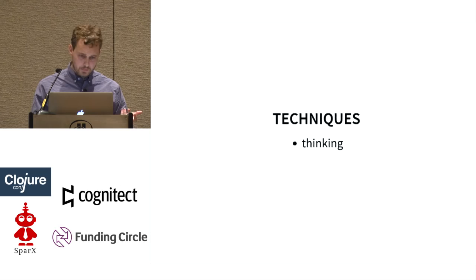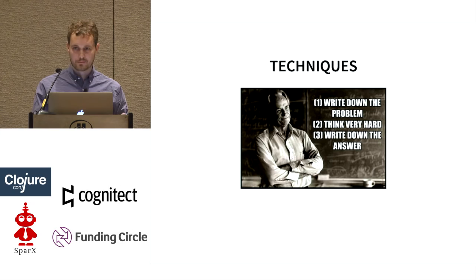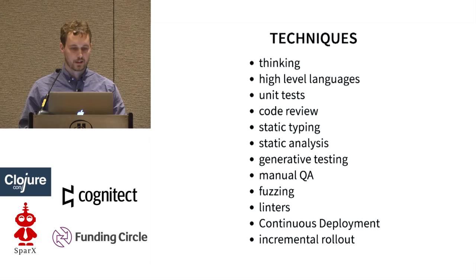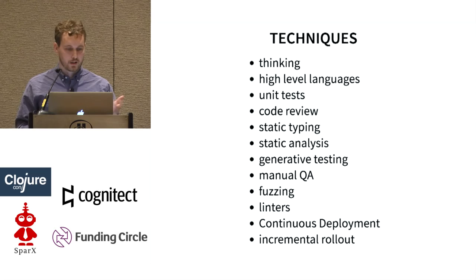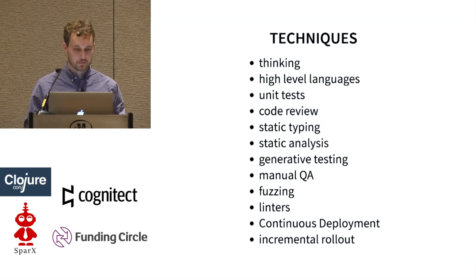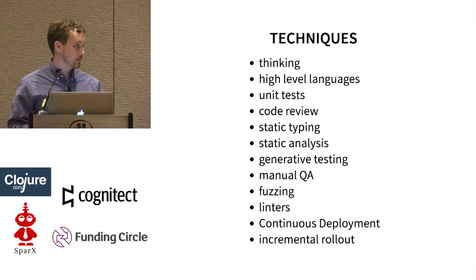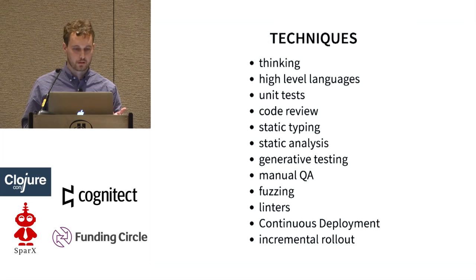Obviously the first technique is thinking — it's a good technique. If you're Feynman, this is your algorithm, but nobody here is Feynman. So we have all these other techniques: thinking, high-level languages, unit tests — you can probably come up with another dozen. Kind of like edge cases: if you have no special cases, you might be solving the problem correctly. If you have 12 special cases, you're probably not. Each one of these things might help, but none of them is perfect.